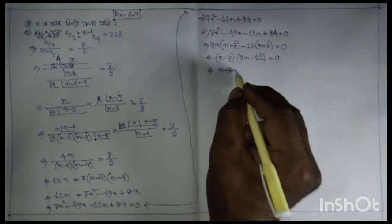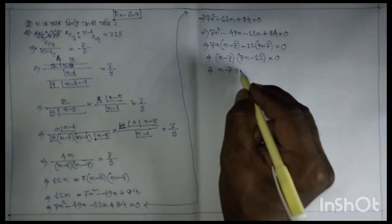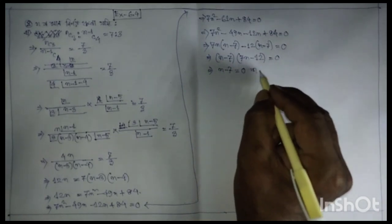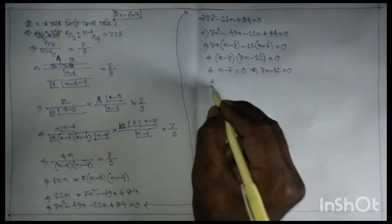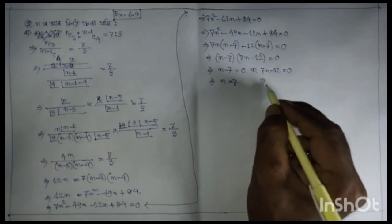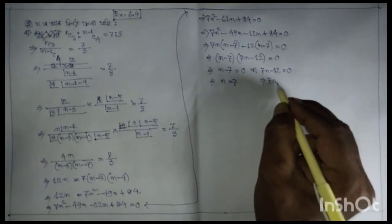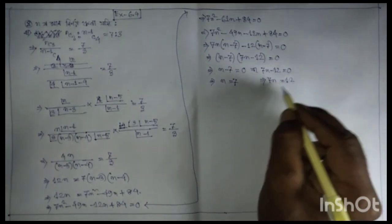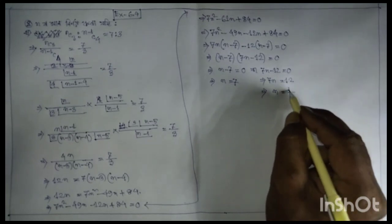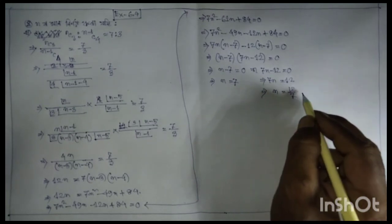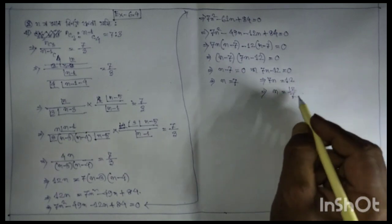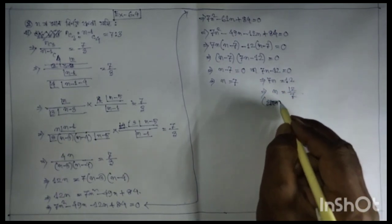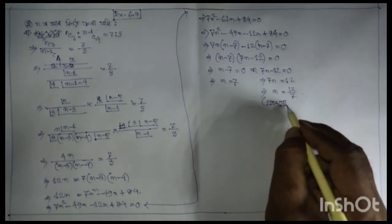Implies n minus 7 into 7m minus 12 is equal to 0. Implies n minus 7 is equal to 0, implies n is equal to 7. Implies n is equal to 12.7, implies n is equal to 12.